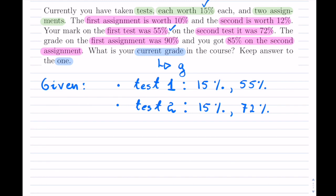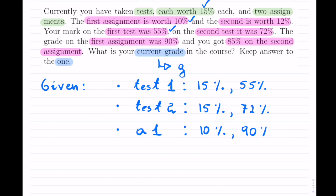And now we have two assignments. So I'll write assignment one. Now assignment one, the first one was 10%. That's how much it was worth. And we received 90% on it.